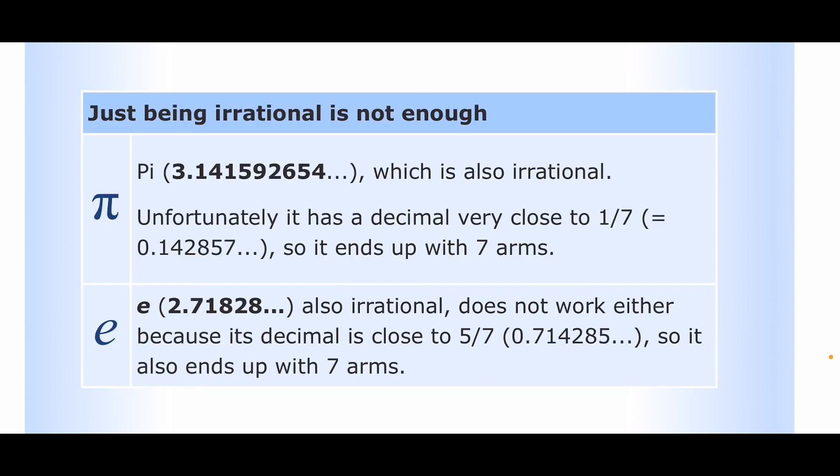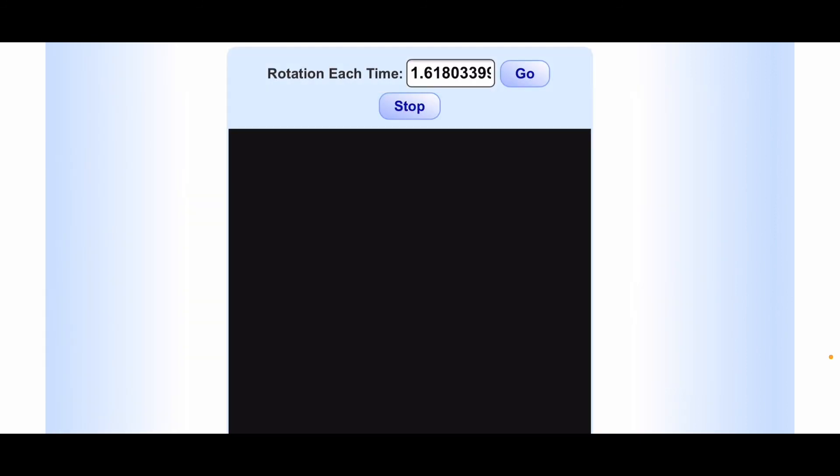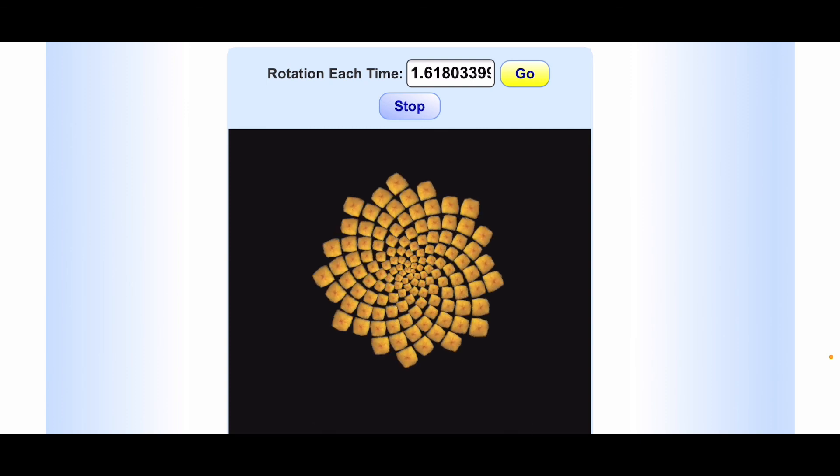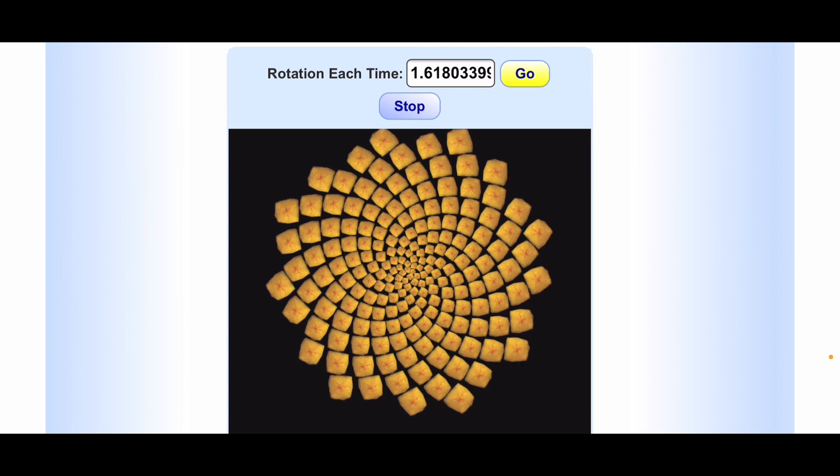Well, it turns out that being irrational is not enough. Pi is close to 1 seventh, so it ends up having 7 spokes. And e is close to 5 sevenths, so it also ends up having 7 spokes. Let's use the golden ratio. And it works!